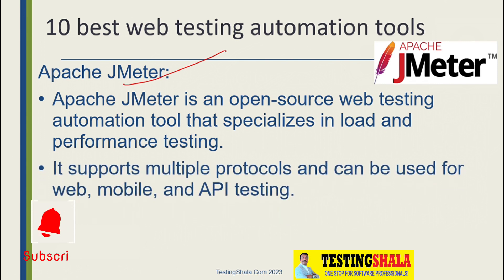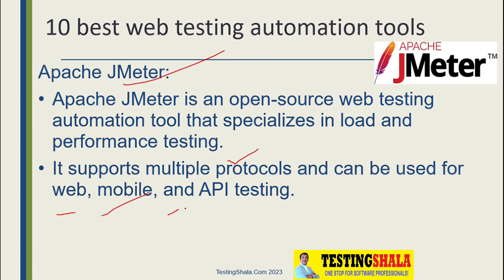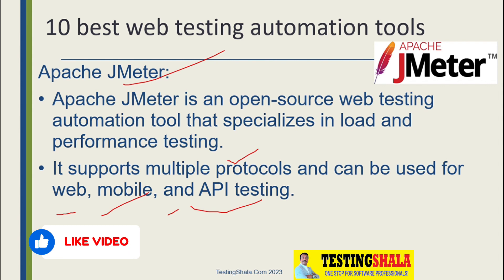We also have Apache JMeter. Apache JMeter is an open source tool we normally use for performing performance-related testing. It supports multiple protocols such as HTTP, HTTPS, and different protocols. This tool can be used to automate web-related areas, mobile applications, and API testing as well. These are the 10 best web testing automation tools which are available and widely used.